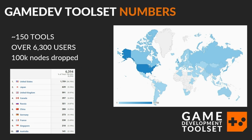We've actually been gathering some numbers. There's over 150 tools, over 6,000 users at this point, 100,000 nodes dropped. Here's some stats on the countries — it is kind of worldwide, and this is around one year of collection starting August of last year. It is a game development toolset, but clearly it's not just for game dev. Film, advertising, and industrial studios are using it too. It's widely adopted and getting rigorous testing.